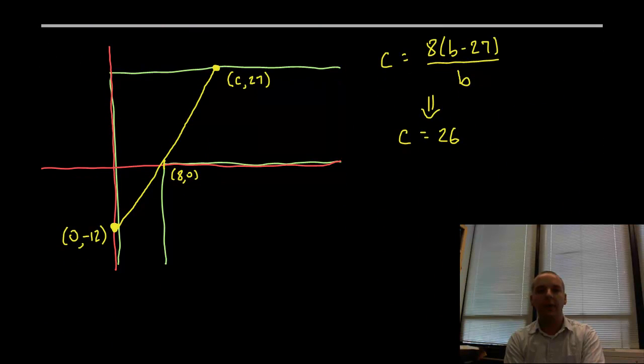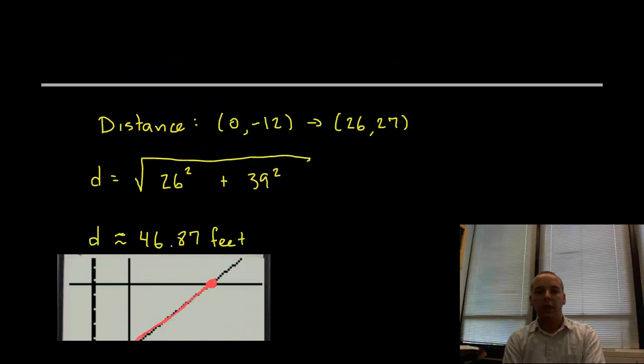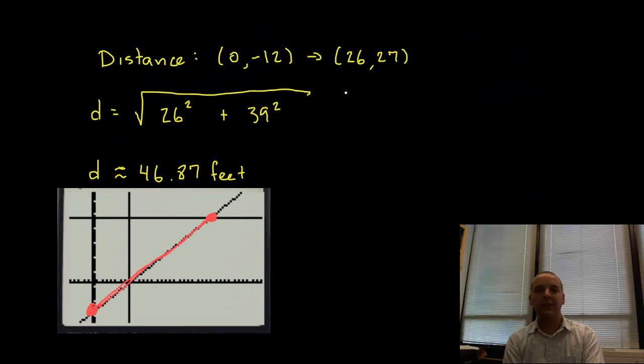So here's an updated picture. I know that this is (0, -12), I know it goes through (8, 0), and I need it to touch on the other side of the wall to (C, 27). I'm going to go back to that formula that I had that related, that constraint that related B and C. And now that I know what B is, if you pop it back in you get C is 26, that's a very reasonable answer. Alright, (26, 27). It's certainly well past 8 like we would expect. So what the actual distance is, is the distance between (0, -12) and (26, 27).